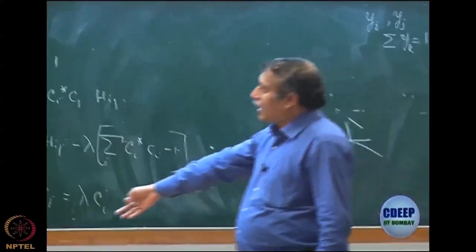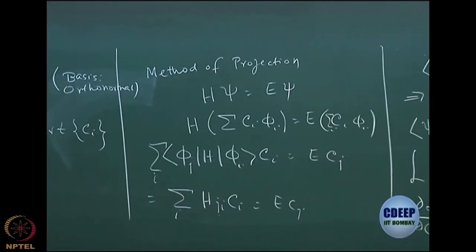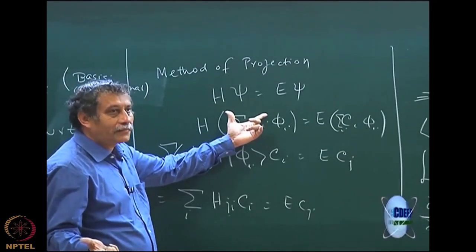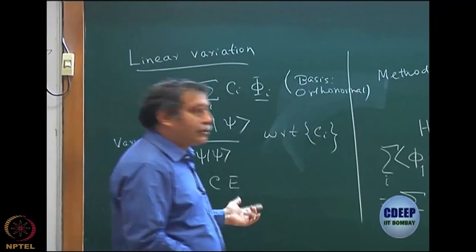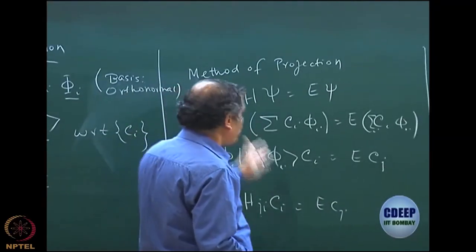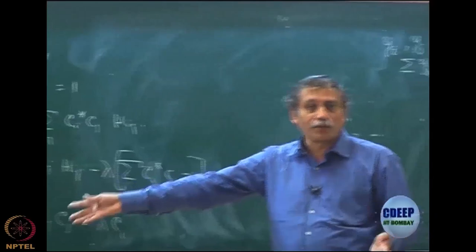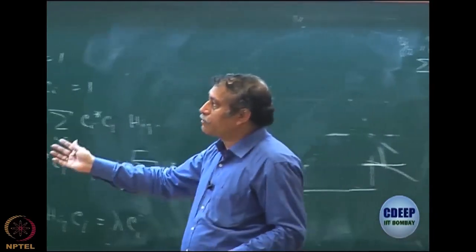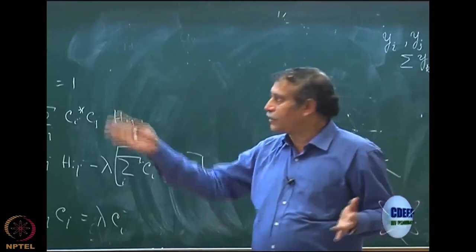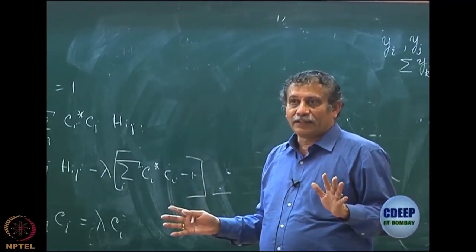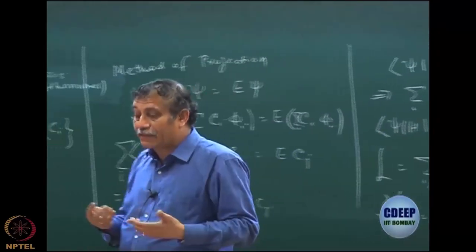The method of projection provides the same results, and this is true in general — why? Because the Schrödinger equation is nothing but an eigenvalue equation. For any eigenvalue equation, whenever you want to optimize the eigenvalue by a variation principle, you will get the same result in the case of linear variation by either variation or method of projection. That is why it is mathematics — it has nothing to do with quantum chemistry per se. We are simply going to use this in quantum chemistry. Anywhere there is an eigenvalue equation, you can use the variation principle.